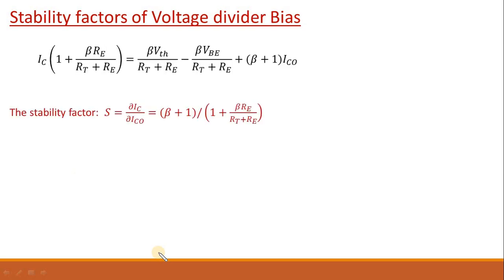So the first stability factor which is S, that is change in Ic with change in reverse saturation current, del Ic upon del Ico. This will be equals to β plus 1 upon 1 plus βRe over Rt plus Re plus βRe. If you look at this expression carefully, then if you choose Re much much greater than RT, then this expression will tend to 1. Therefore I can say if you increase Re your stabilization against reverse saturation current will improve.